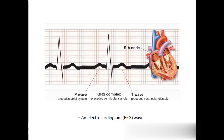You can count the number of heartbeats also by counting the number of QRS complexes per minute. Likewise, you can count the heartbeat. Per minute, this many heartbeats are recorded — this is the ECG.